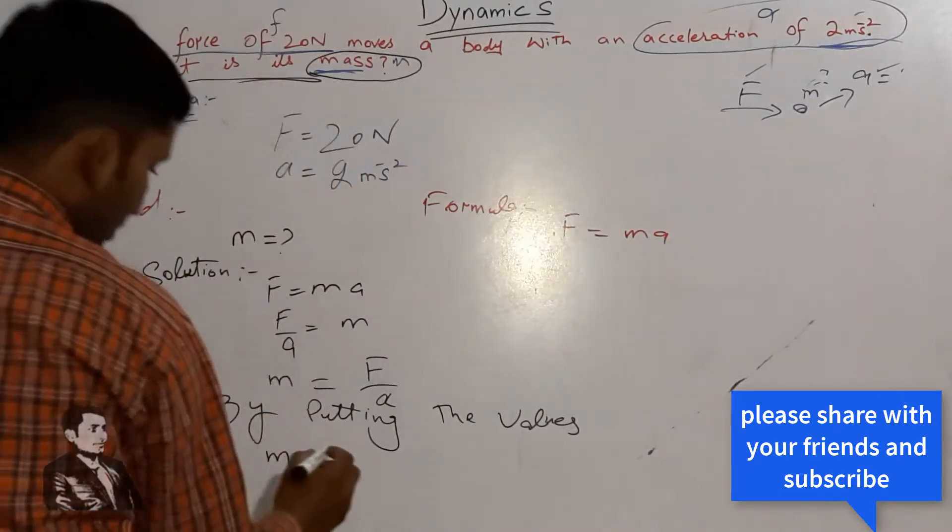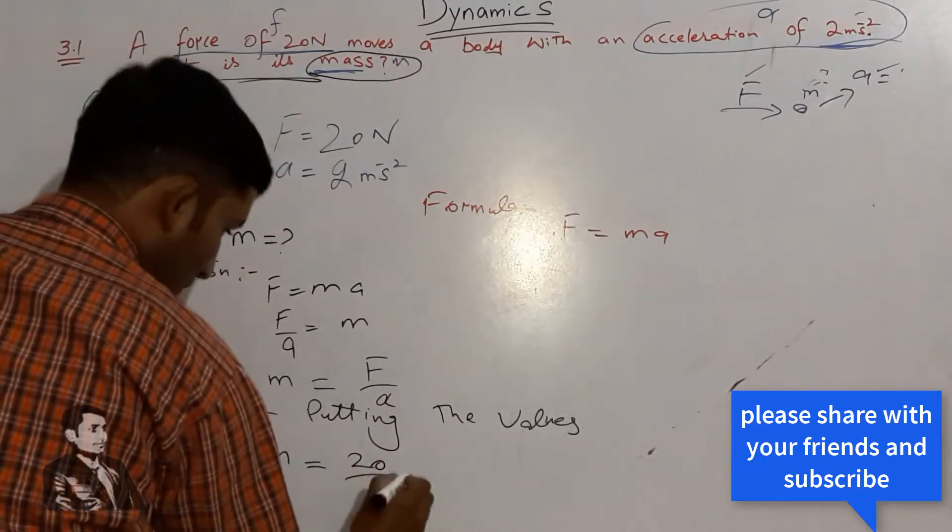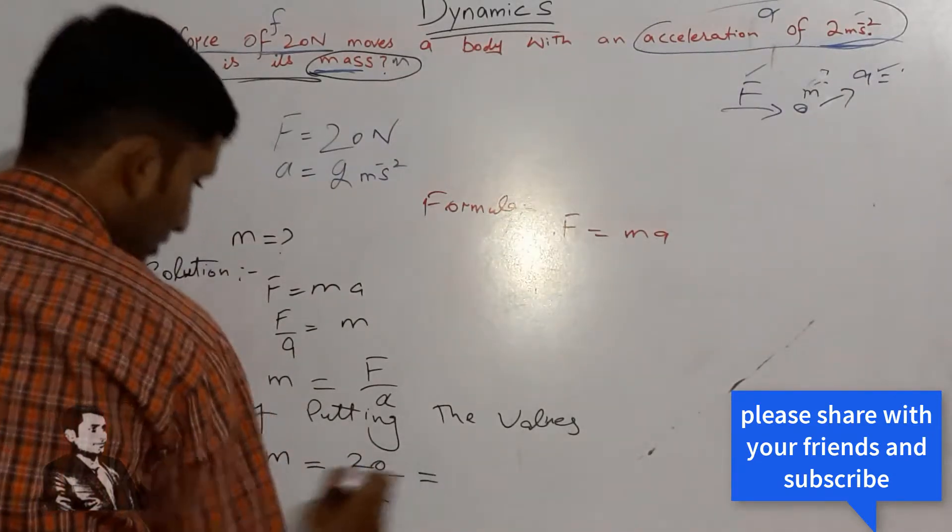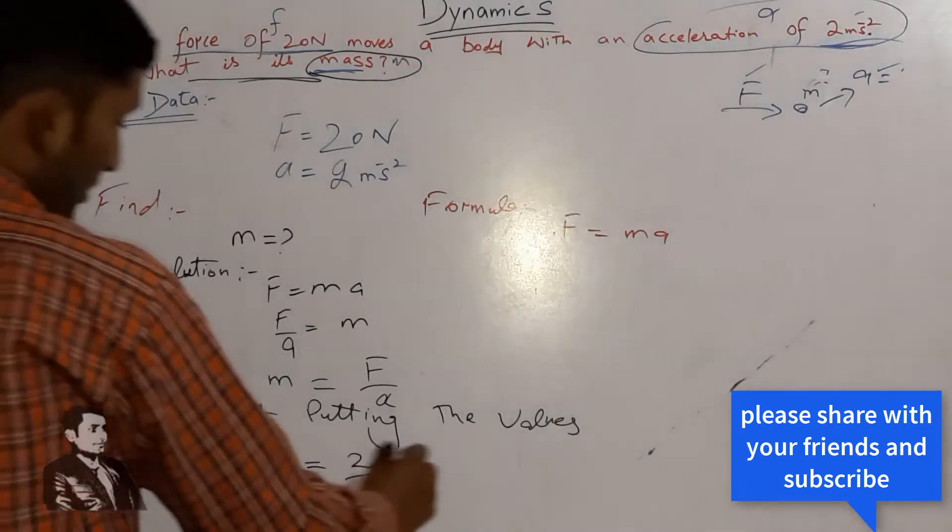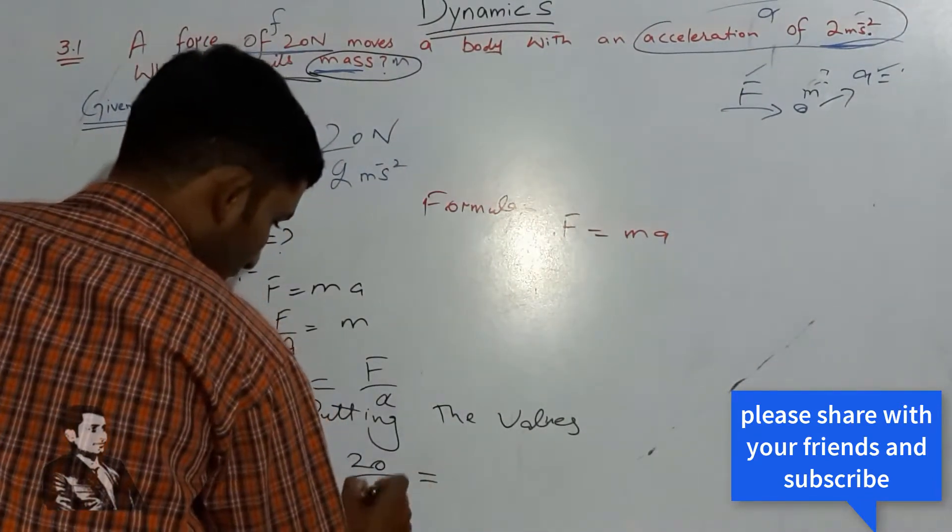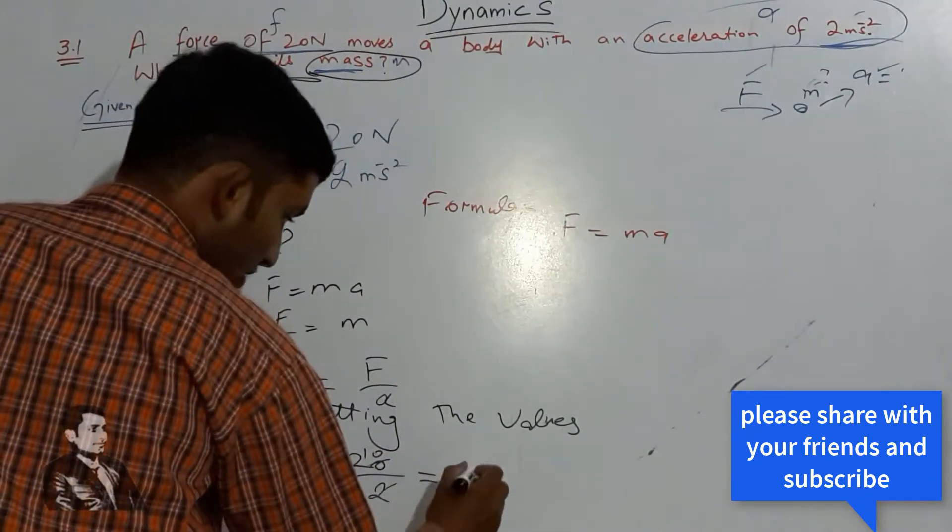F is 20 Newton and acceleration a is 2. Now if we simplify it, 20 divided by 2 equals 10.